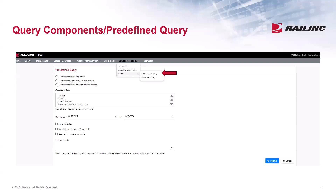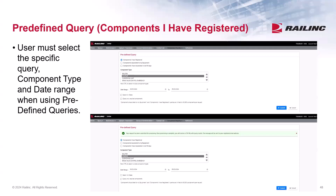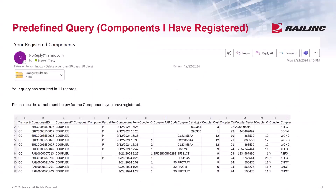The first option from the predefined query list is to query by components I have registered. Choose your component type and the date range you want to search by, and then submit. Notice the default date range is 30 days from the current date, or you can select search all dates. You will receive an email after the query is complete. The email will have a count of how many records were found, and the results of your search will be available in an email attachment.